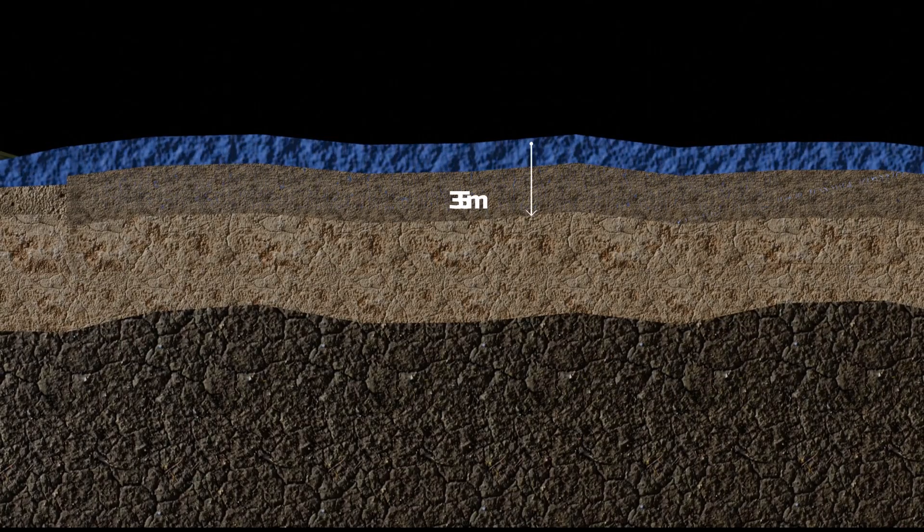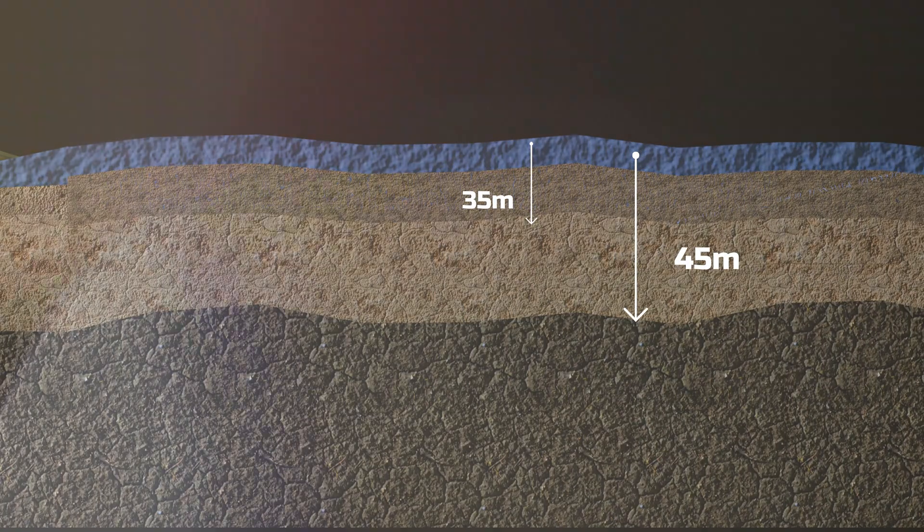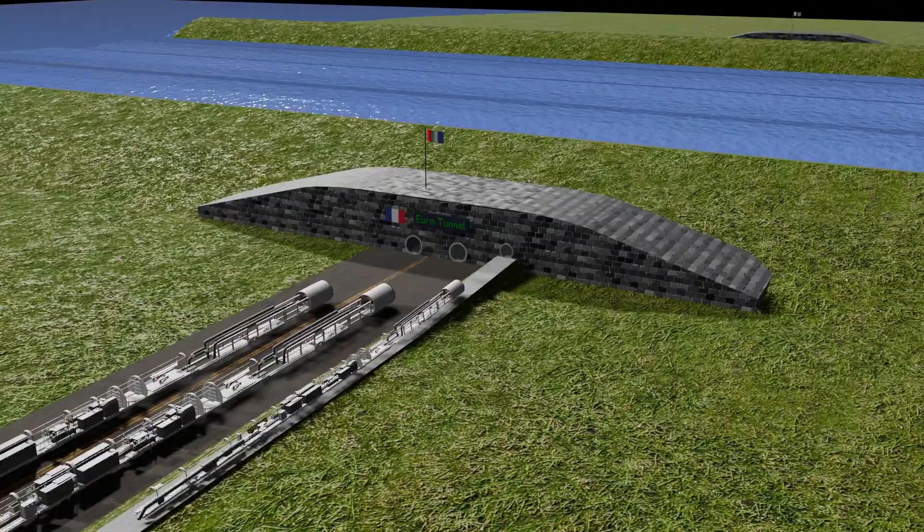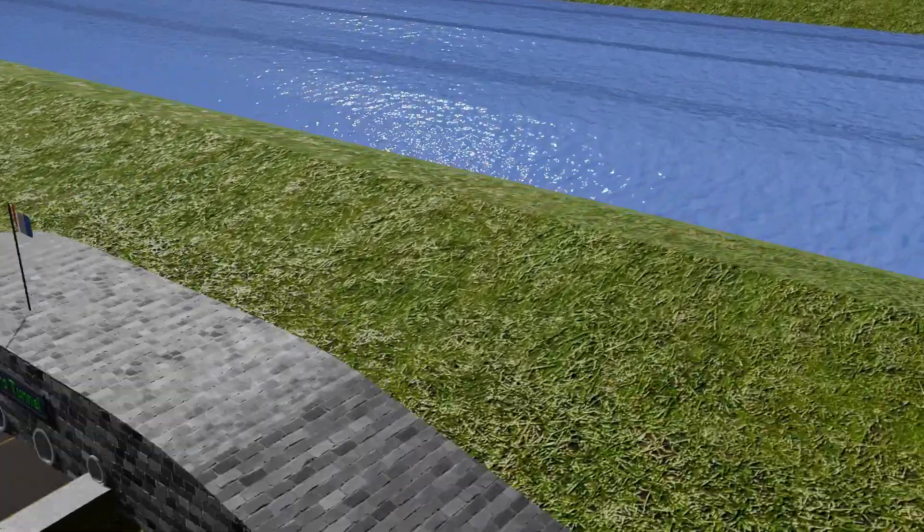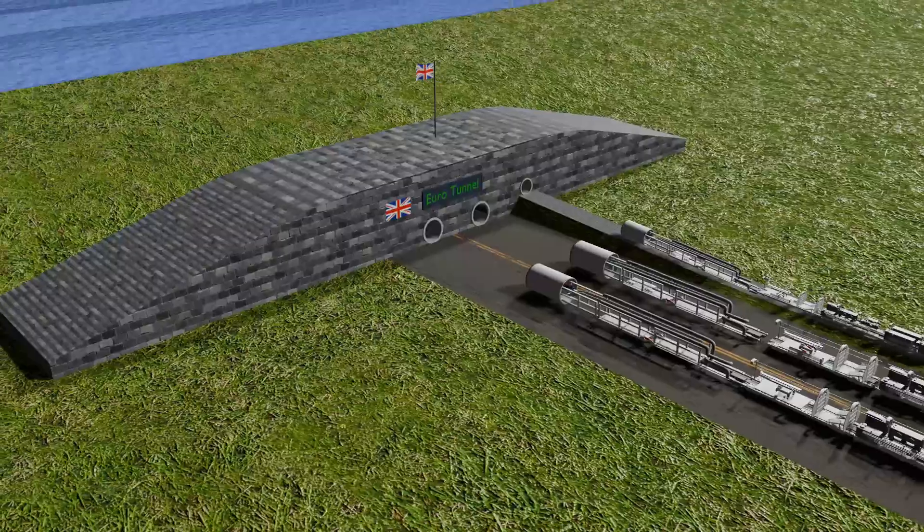It is located 35 to 45 meters below the seabed. In 1988, when construction of the tunnel began, both countries decided to dig from their respective sides and meet at a central point.